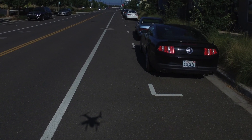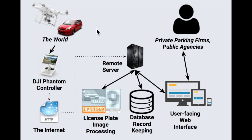We'll talk more about that next. We just saw how the drone collects its evidence. Let's take a closer look at what happens on the server. Our server runs four separate processes. First and foremost is a service to accept the incoming images and data from the drone. Our second process is a service to run license plate recognition on those images.